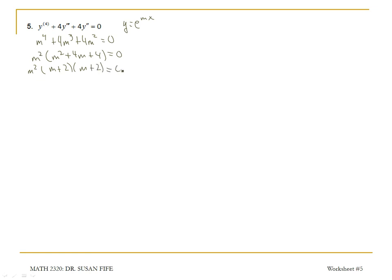So notice here we have two sets of repeated factors. We have m squared. Setting m squared equal to zero, we're going to get m equals zero. That's going to be a multiplicity of 2 because of our power of 2. And then m plus 2 equals zero gives us m is equal to negative 2. And that's also a multiplicity of 2 because we have two factors.